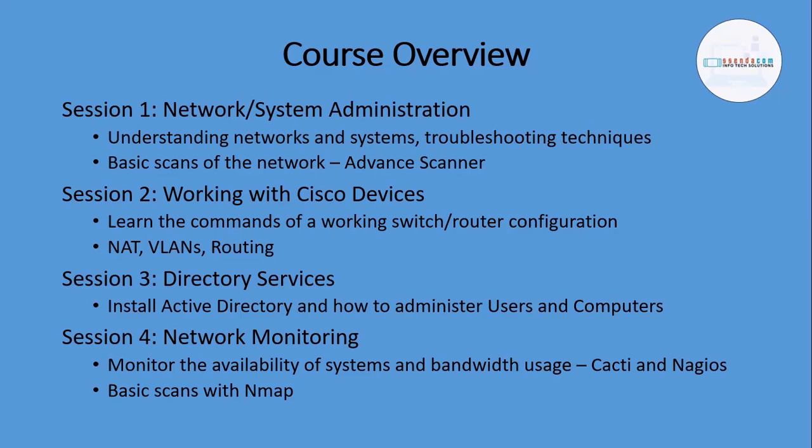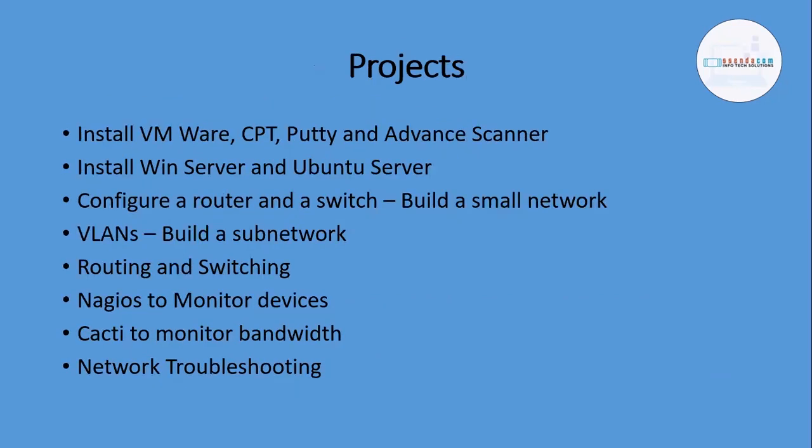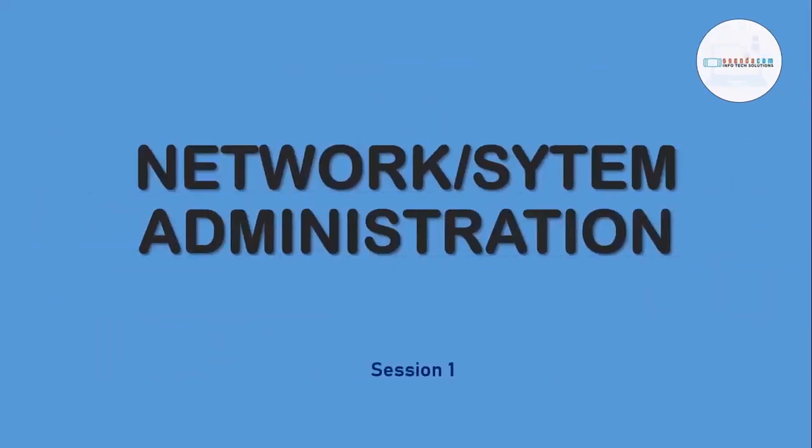In session three, we cover directory services — we'll install Active Directory and learn how to manage and administer users and computers on the network. In session four, we look at network monitoring: monitoring the availability of our network and whether systems and services are working. We'll install and configure Azure, and finish with a basic scan using Nmap to test vulnerabilities in our network before anybody attacks it. We'll also install VMware, CPT, and Packet Tracer, configure a router and switch, and build a small network. We'll also cover network troubleshooting techniques.